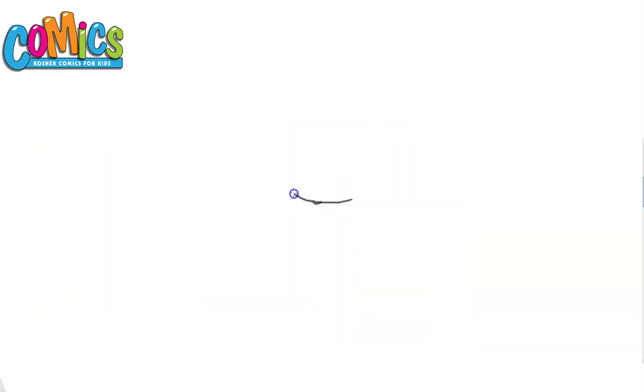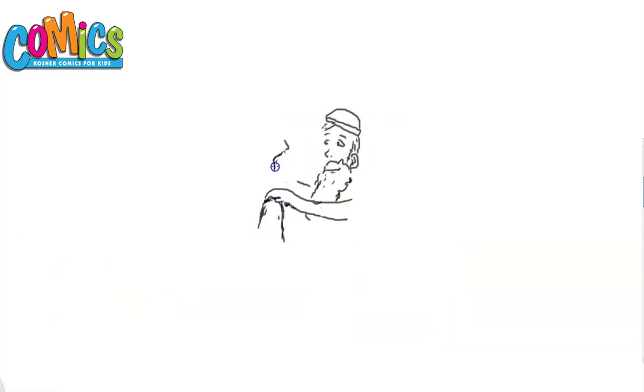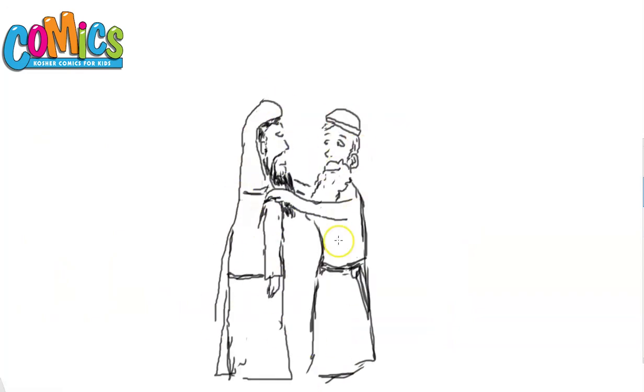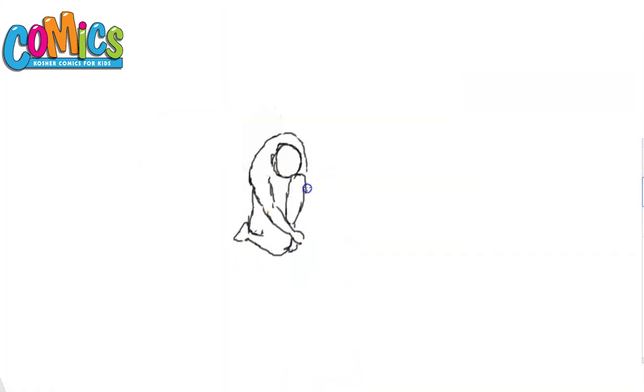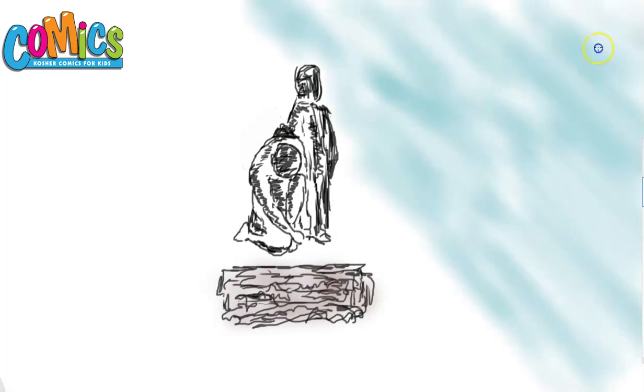Avraham marries a woman named Ketura and has more children which he sends to the east with gifts, but all his property he bestows upon Yitzchak. Avraham passes away and he is buried in Ma'arat HaMakpela by his sons Yitzchak and Yishmael.